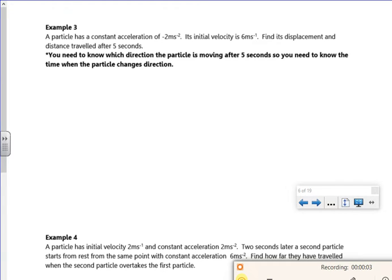Hi everyone, this is the third example for the first lesson. The particle has a constant acceleration of minus 2, so that's a. Its initial velocity is 6. Find the displacement and the distance traveled after 5 seconds.